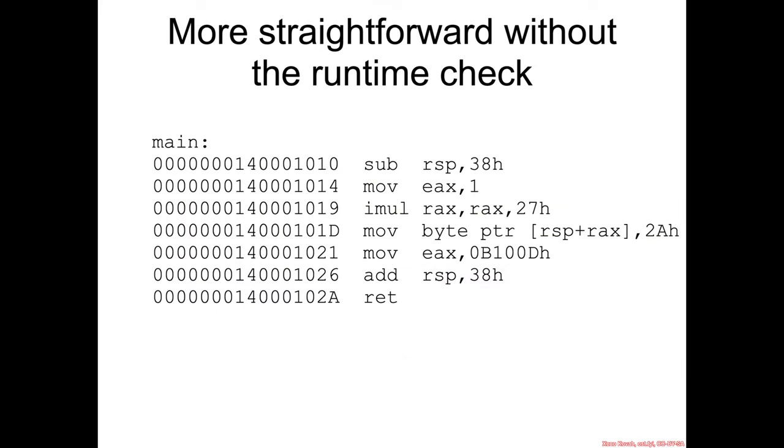If we do disable that runtime check, then we will see much simpler code which we are more familiar with: the typical over-allocation of space for the shadow store, indexing into our array at index 0x27 which is 39, storing 42 to the array, and returning 0xB100D.